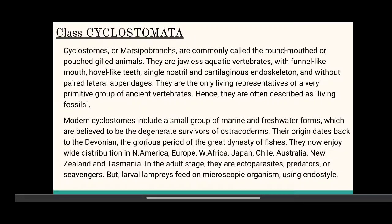Class Cyclostoma: Cyclostomes are commonly called the round-mouthed or pouched-gilled animals. They are jawless aquatic vertebrates with funnel-like mouth, hole-like teeth, single nostril, and cartilaginous endoskeleton, and without paired lateral appendages. They are the only living representatives of a very primitive group of ancient vertebrates. Hence, they are often described as living fossils. Modern cyclostomes include a small group of marine and freshwater forms, which are believed to be the degenerate survivors of Ostracoderms.